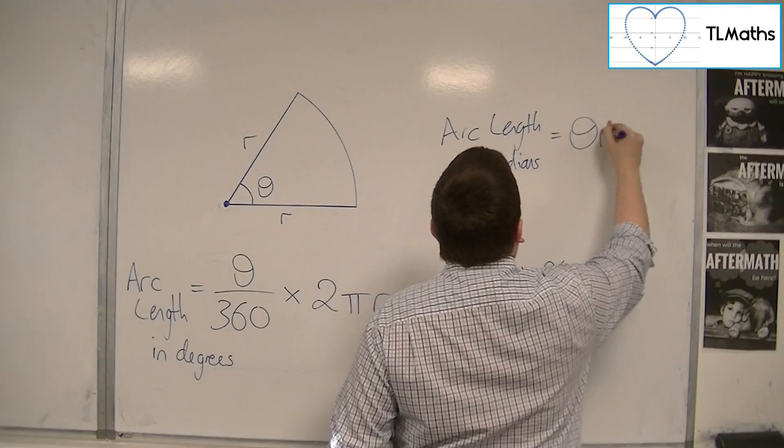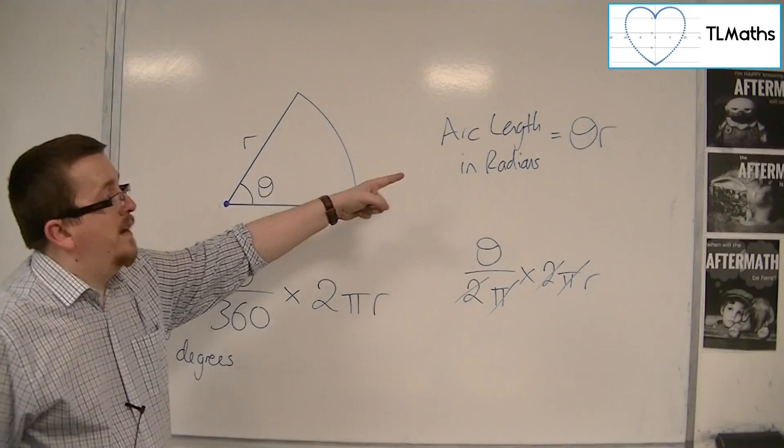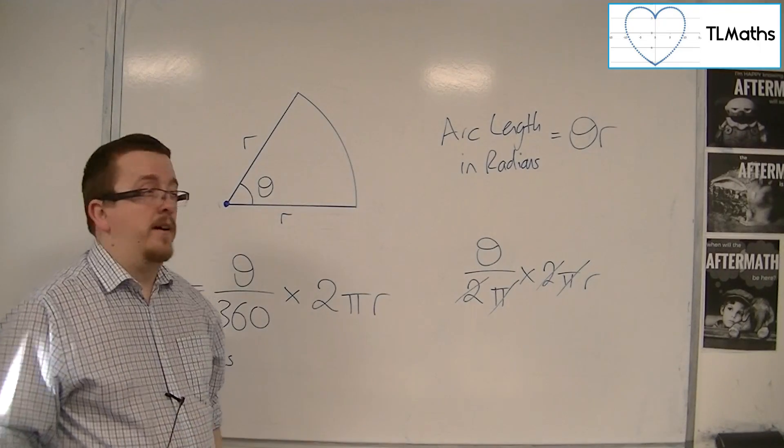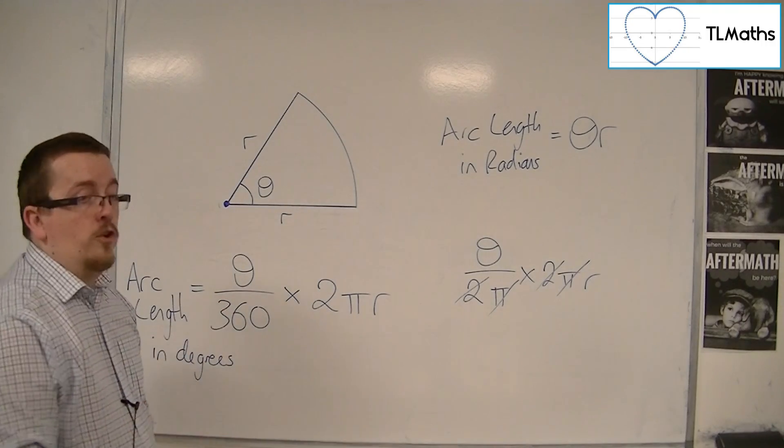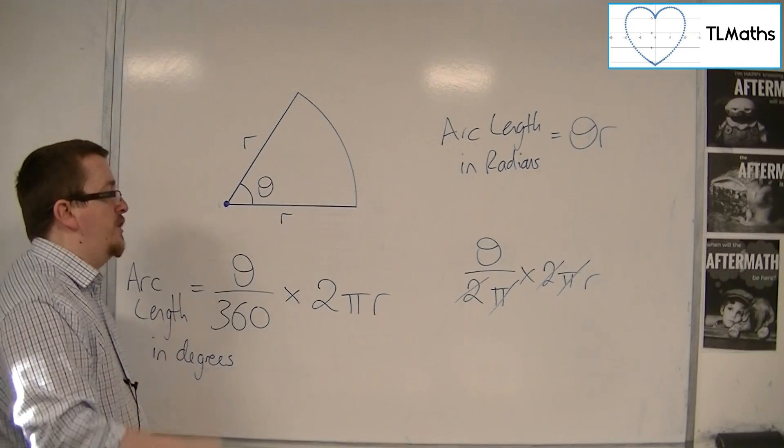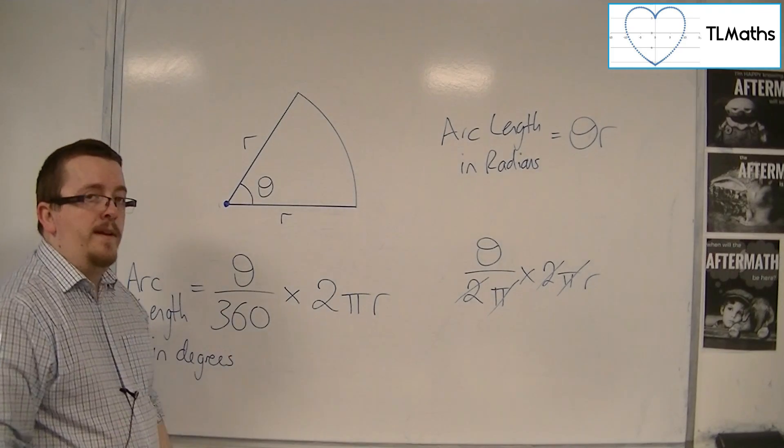In radians, the formula for the arc length is just theta times r. The angle in radians times the radius. Which is a whole lot quicker to work with, and a lot easier to work with than this formula here.